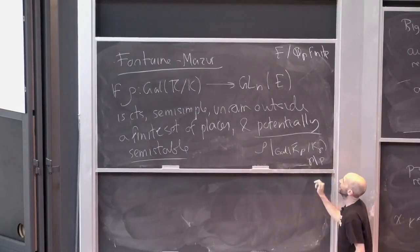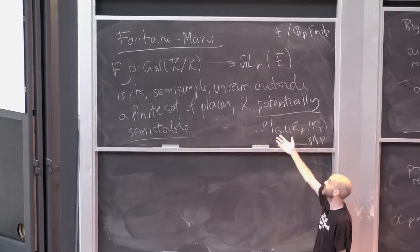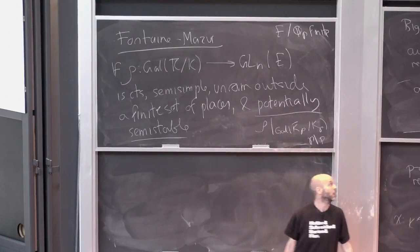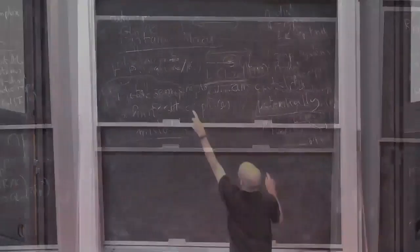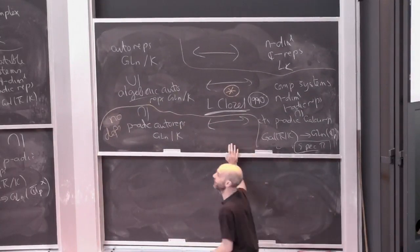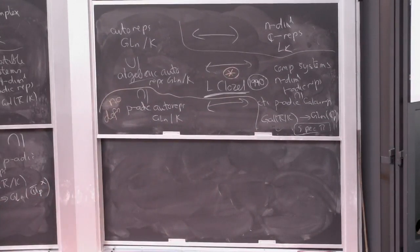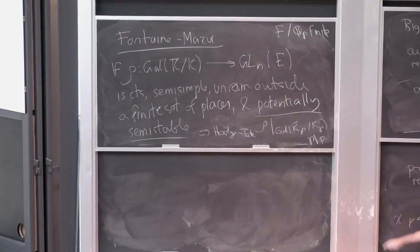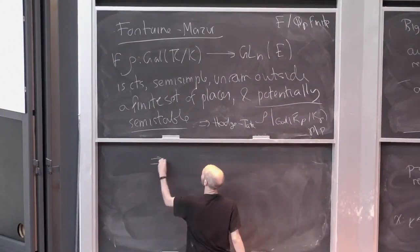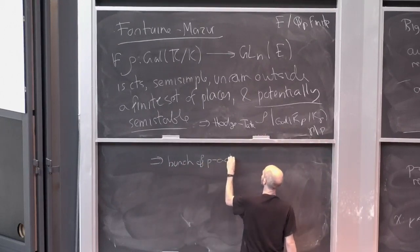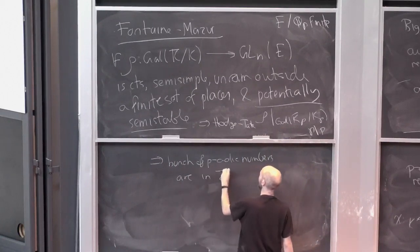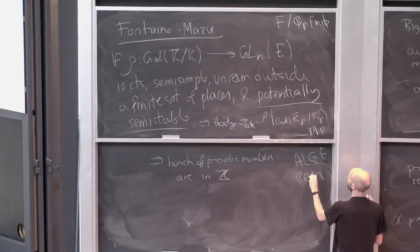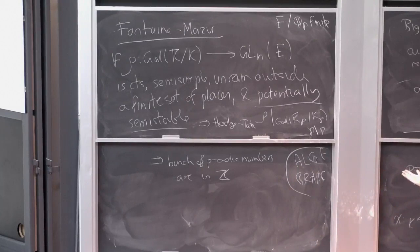Potentially semi-stable implies Hodge-Tate. Hodge-Tate means your Sen operator, which has some random p-adic numbers as eigenvalues, has all eigenvalues in Z — whole numbers. So this must be what it means for a p-adic Galois representation to be algebraic: a bunch of p-adic numbers are whole numbers. Just the same as what it means for an automorphic representation to be algebraic: a random bunch of complex numbers are all whole numbers. Some people call this 'geometric' in the literature, but it should be called algebraic.